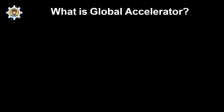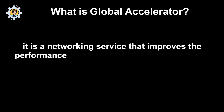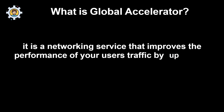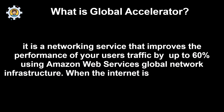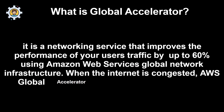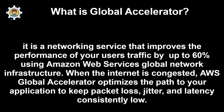What is Global Accelerator? It is a networking service that improves the performance of your users' traffic by up to 60% using Amazon Web Services' global network infrastructure. When the internet is congested, AWS Global Accelerator optimizes the path to your application to keep packet loss, jitter, and latency consistently low.